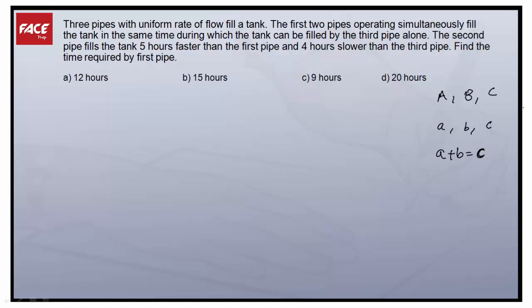There are many ways to solve this problem, but the best way is going from the options. Let's take Option A: the time required by the first pipe is 12 hours. The second pipe fills the tank five hours faster than the first pipe, so the second pipe takes 7 hours.